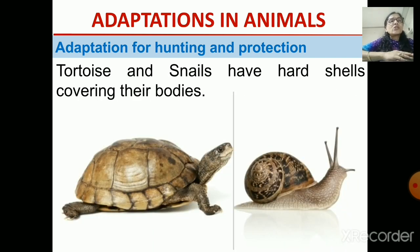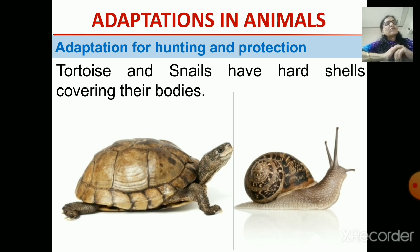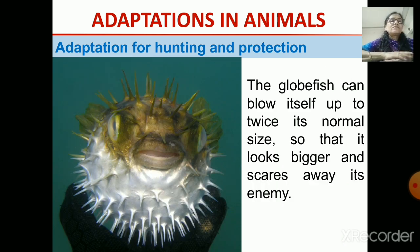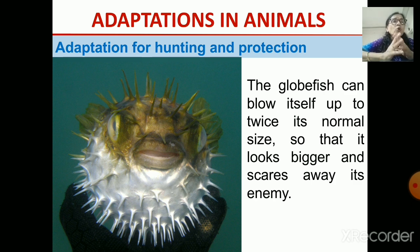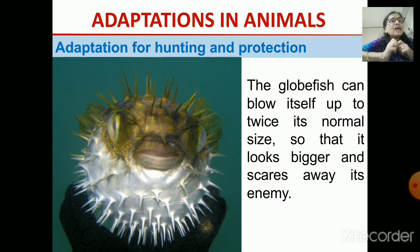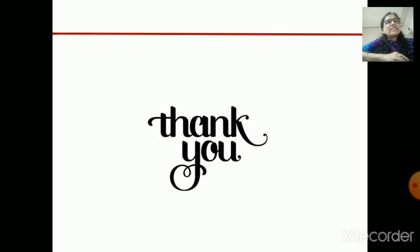Some animals like tortoise have shells — they have got a hard shell covering their body so that their soft body inside is well protected. The hard covering protects their soft body inside it. Another example is the globefish. It blows up to twice its normal size so that it looks bigger, and this scares away its enemies. The enemies get scared by its size and go away — this is how the globefish defends itself.